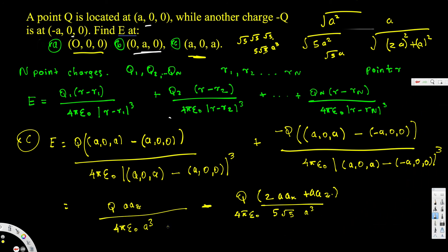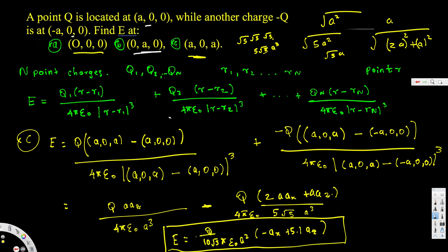Taking q common and simplifying, the final answer for Part C is: E = q / (10√5·πε₀·a²) · (negative ax + 5.1·az). That's our final expression for Part C, and that's how we solve this type of problem with multiple point charges at different observation points.